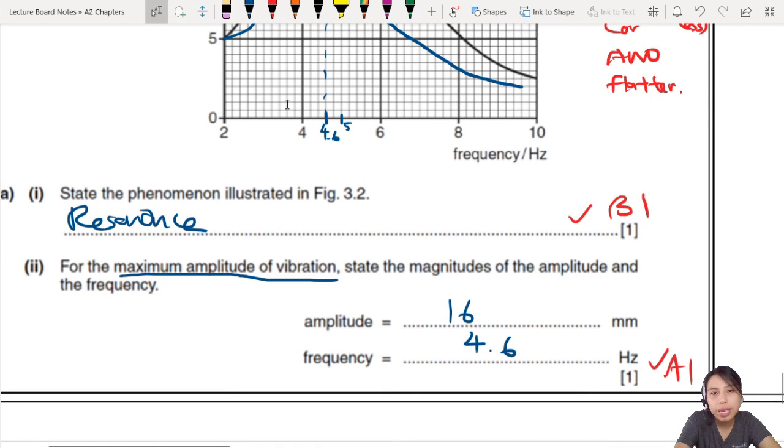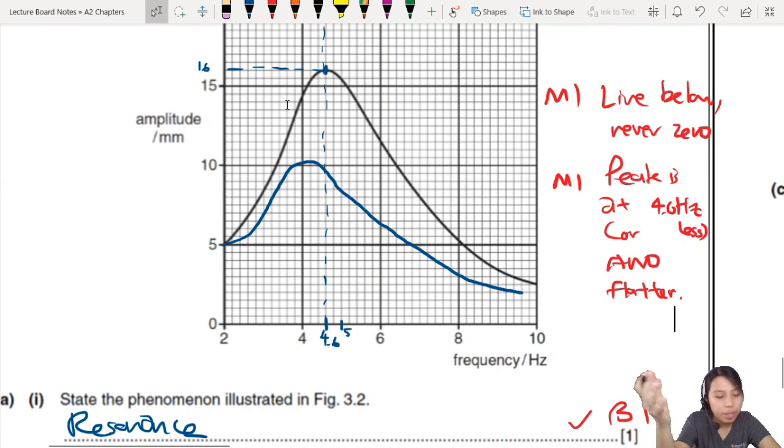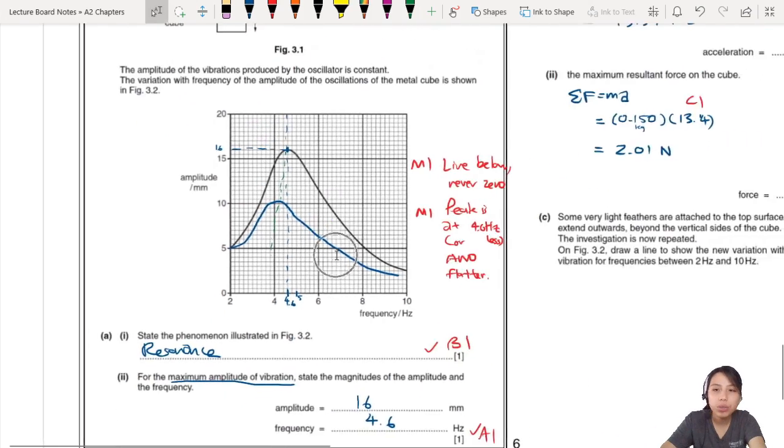Before that, frequency is 4.6, but your new peak has to be at 4.6 or a little bit lower. So, I prefer to do a little bit lower. Because once you have damping, then your frequency will decrease a bit. So, that's why I shift that. So, you can draw something like that. Okay? So, that is the end of these two questions.